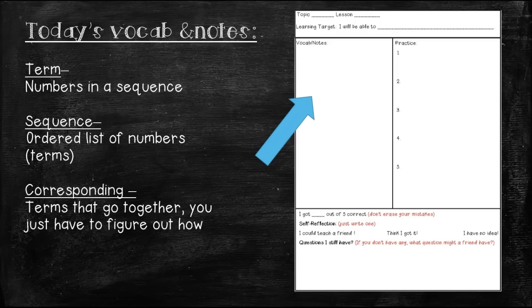Here are a couple of vocabulary words that you need to write down today. Our first one is term. A term is the numbers in a sequence. Sequence, that would be the ordered list of numbers or terms.